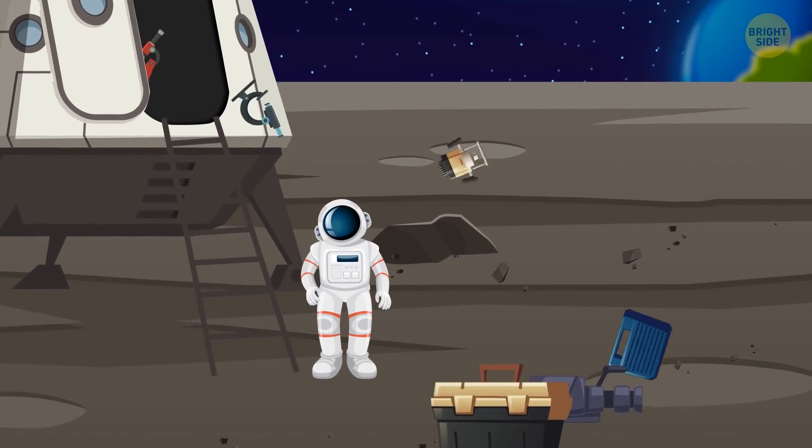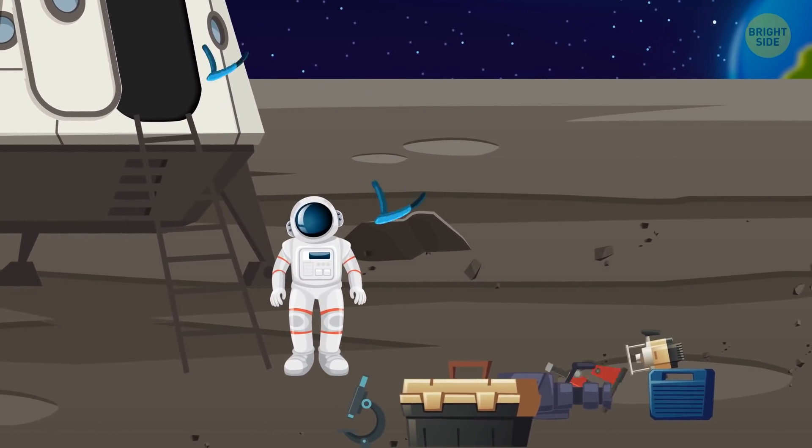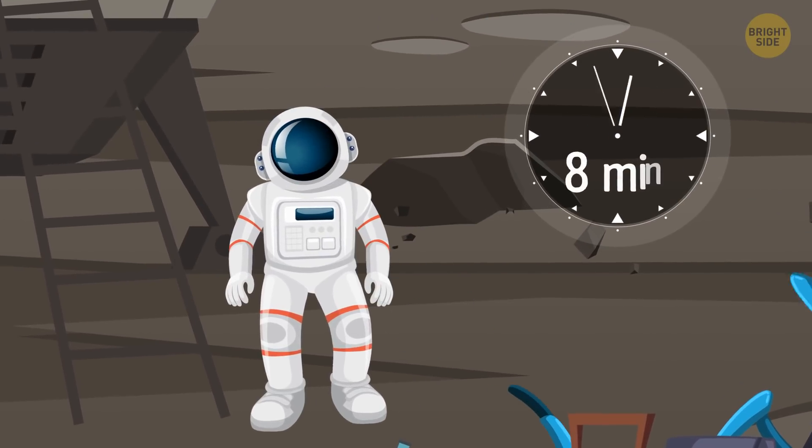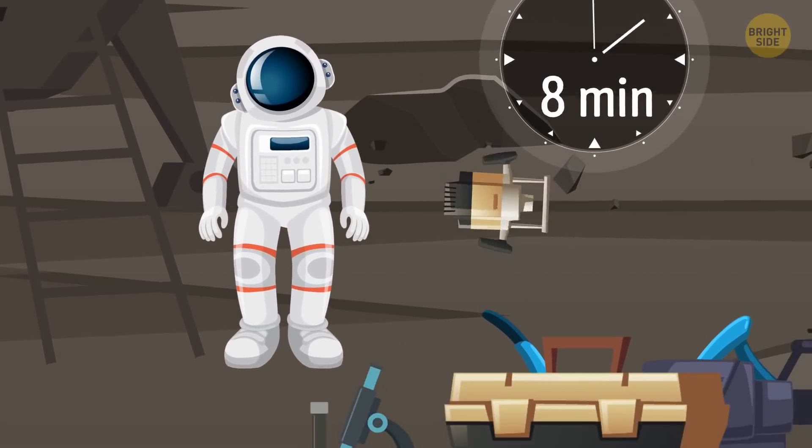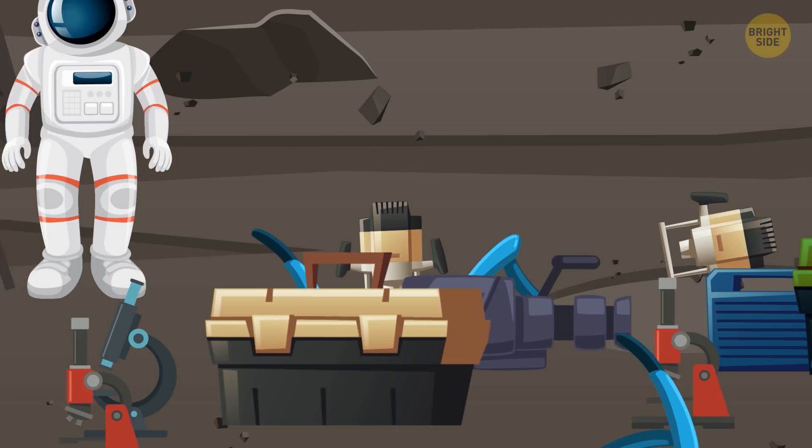the sample collection tools, the science equipment, and even the armrests from the seats. The astronauts stood outside the lunar module for a full eight minutes and threw out a whole mountain of unnecessary items.